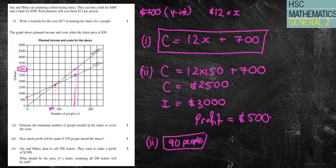Sorry about that. So that was part 2. So I've already done part 3 now. So now part 4. Sue and Mikey plan to sell 200 tickets. They want to make a profit of $1500. What should be the price of a ticket assuming all 200 tickets will be sold?